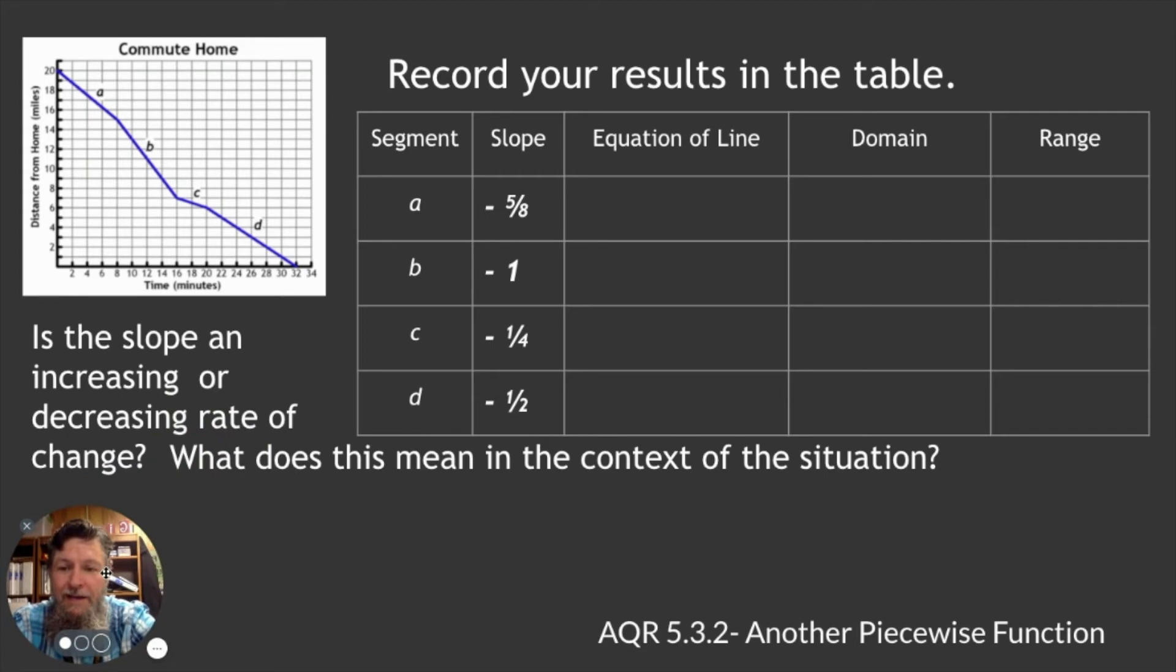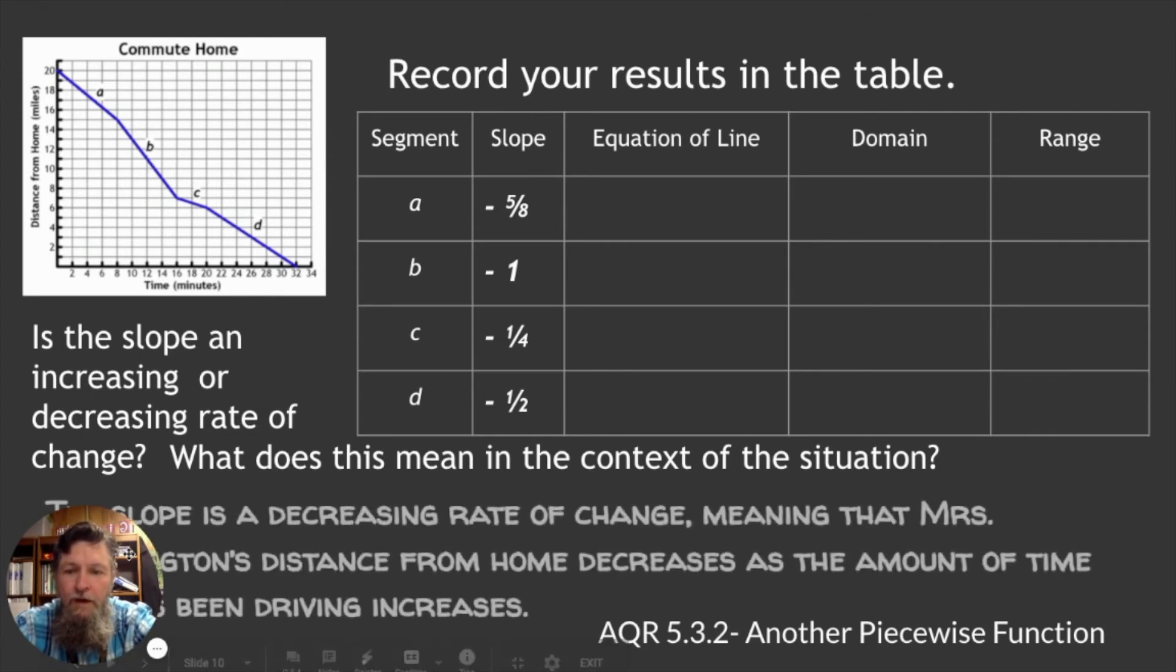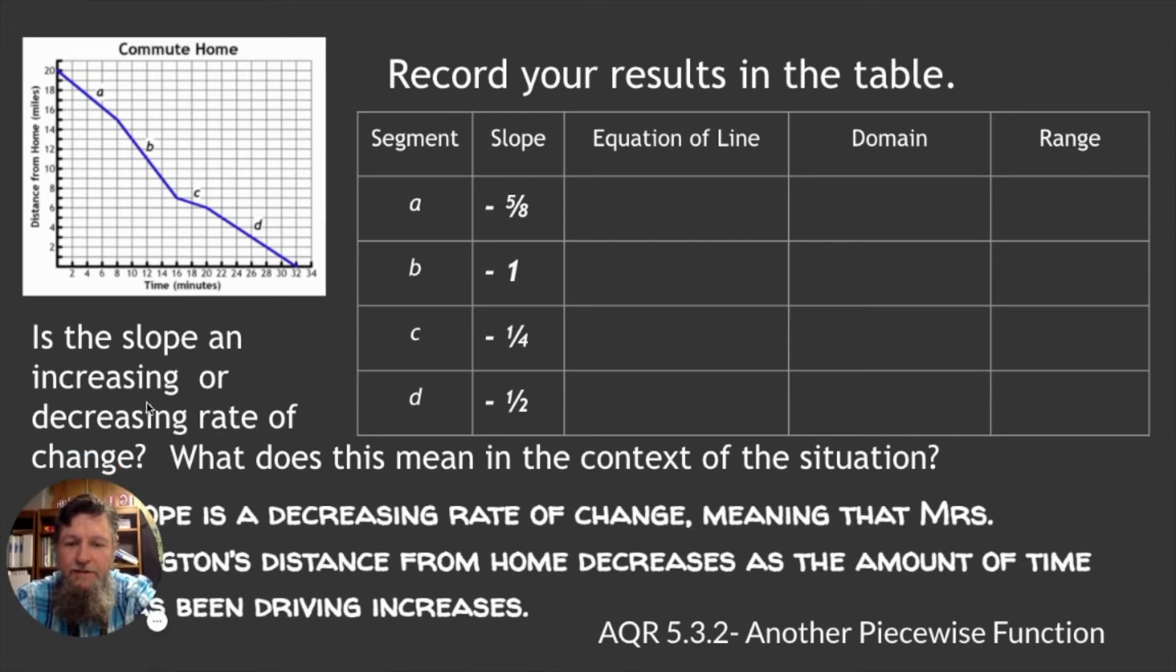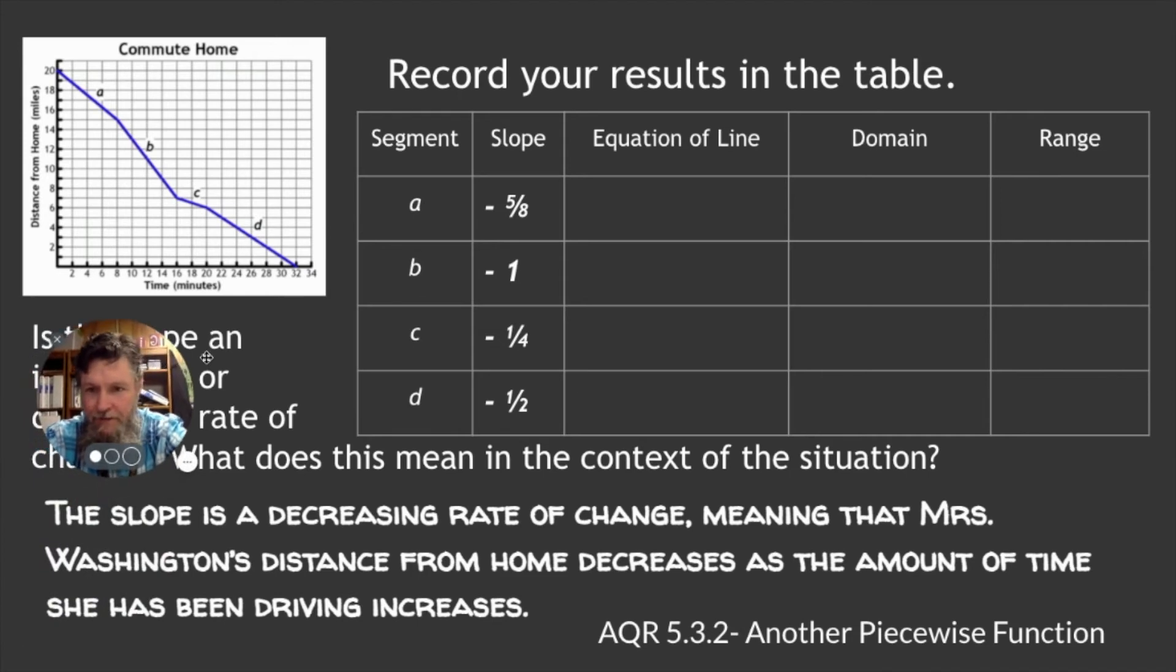Is the slope an increasing or decreasing rate of change? And what does this mean in the context of the situation? That's pretty simple. The slope is decreasing rate of change, meaning that Mrs. Washington's distance from home decreases as the amount of time she has been driving increases. And that's what I just stated earlier.